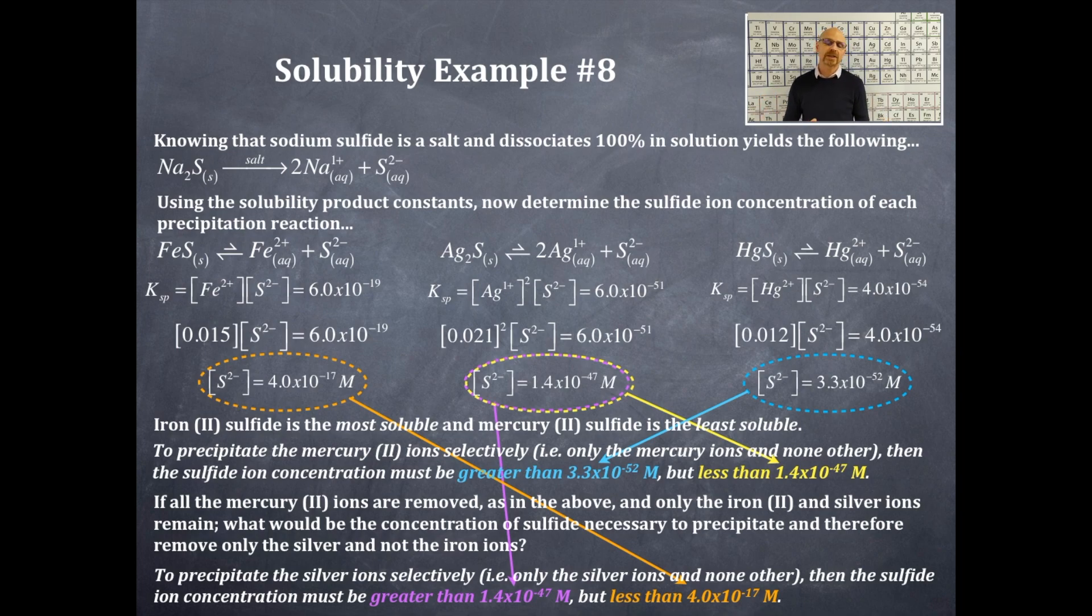Hopefully, that will enable us to figure out that we can selectively precipitate certain ions. Okay? It's mostly these transition metal cations that are very toxic to humans, and we want to remove these from solution. There are certain ions that we let and stay and keep in the water that we use for potable water, like calcium ions, for example.